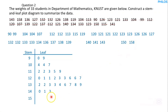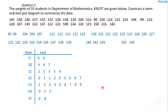For the 140s: leaves are 0, 1, 3. For the 150s: leaves are 0 and 8. That's how to construct a stem and leaf plot. You can count all the leaves to confirm the total is 33. Subscribe to the channel and like this video for more tutorials. Thank you and see you in the next tutorial.